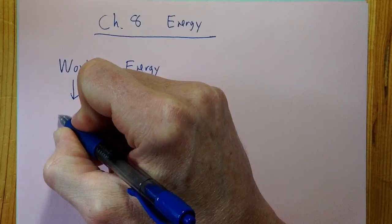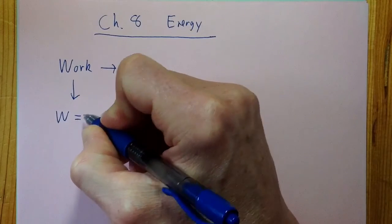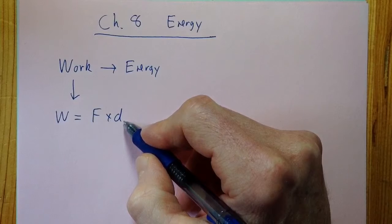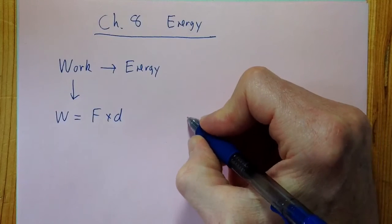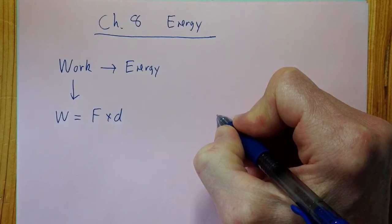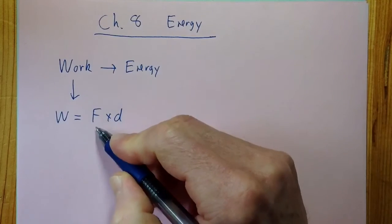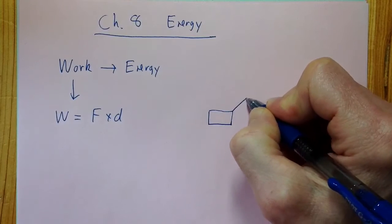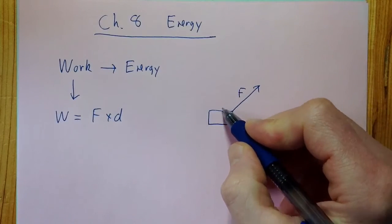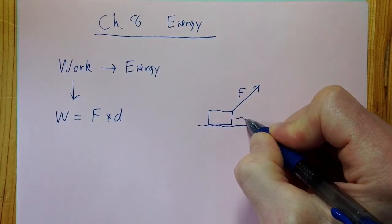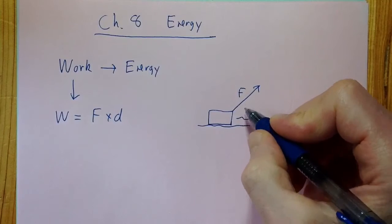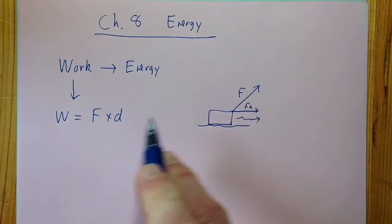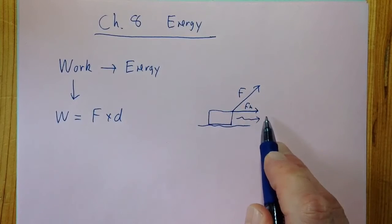So what is work? Work is defined as W, the work done is the force times the distance, and the distance has to be in the direction of the force. For instance, if you carry something sideways, there's really no force stopping you. Gravity's going up and down, so no work is done. The force and the distance have to be in the same direction.